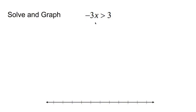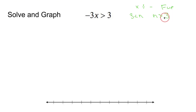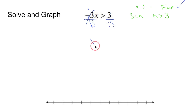Solve and graph this inequality. When graphing inequalities, remember two things: first, if you multiply or divide by a negative, you flip the symbol. Also, if your variable is on the right — so if I have something like 3 is less than n — that becomes n is greater than 3. Flip everything. Otherwise, solving an inequality is just like solving an equation.